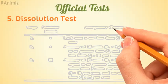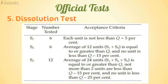The acceptance criteria for the dissolution test work in three stages. In Stage 1, 6 tablets are tested and each unit must be not less than Q+5%, where Q is the specified percentage of drug dissolved. If that fails, Stage 2 tests 6 additional tablets: the average of 12 must be ≥Q and no unit less than Q−15%. If Stage 2 also fails, 12 more tablets are tested: the average of 24 units must be ≥Q, not more than 2 units may be less than Q−15%, and no unit shall be less than Q−25%.